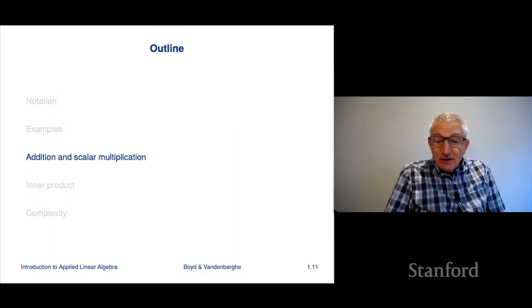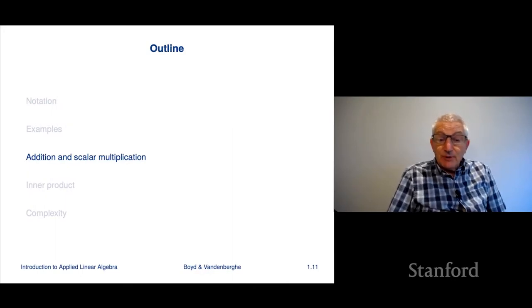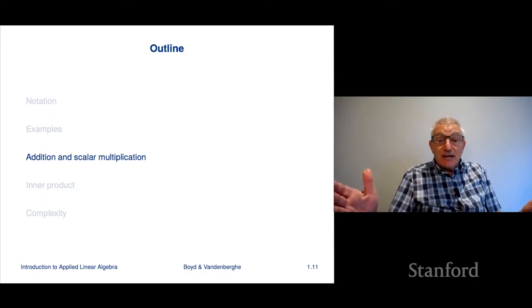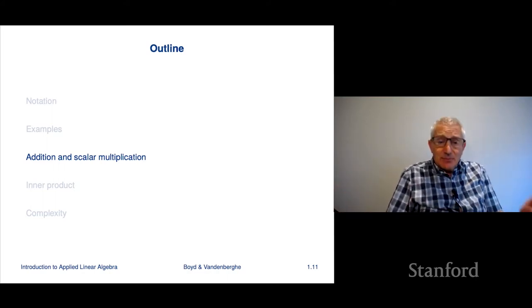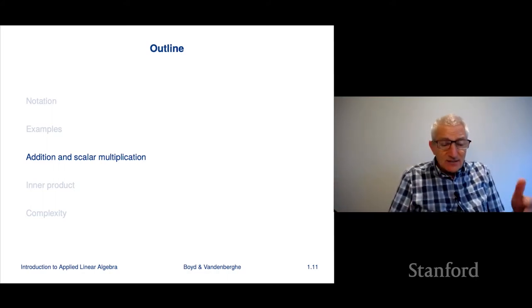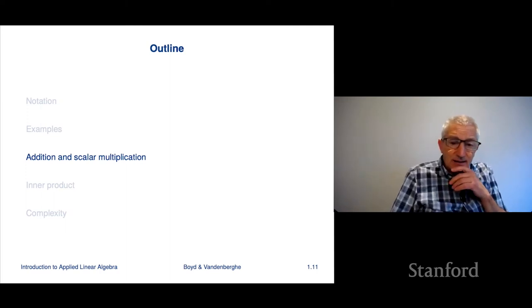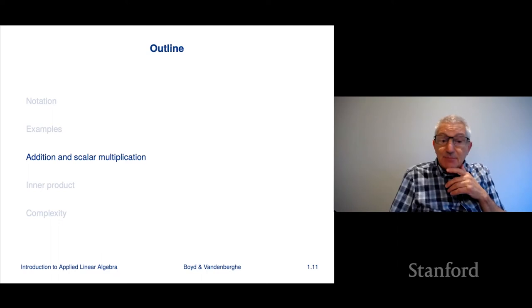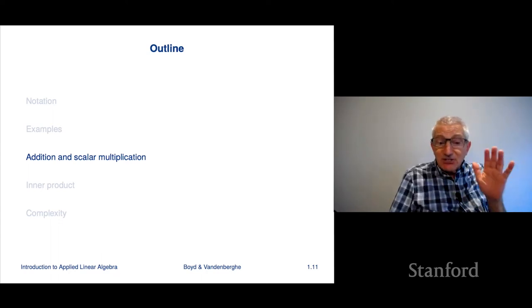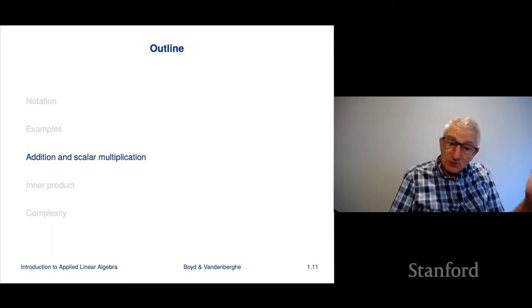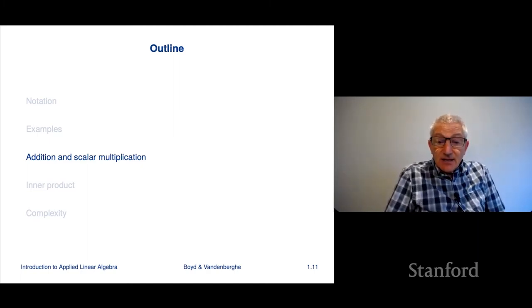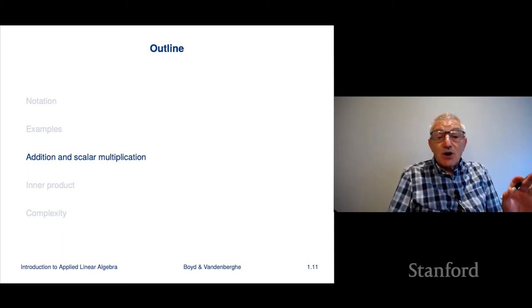In this section, we're going to talk about two very basic operations on vectors. So far, we haven't done anything with vectors. You've met a couple that have special names like the ones vector, zero vector, and unit vectors. In the last section, we talked about examples of vectors. But so far, we haven't actually done anything with them. In this section, what we're going to talk about is addition and scalar multiplication — these are operations on vectors.